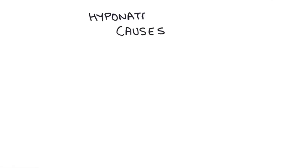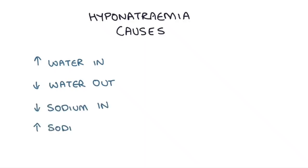Next, let's look at the causes of hyponatremia. In order to work these out, we need to understand what controls the concentration of sodium in the blood. There are four ways that sodium concentration can drop: if there's more water coming in, less water going out, less sodium coming in, or more sodium going out.